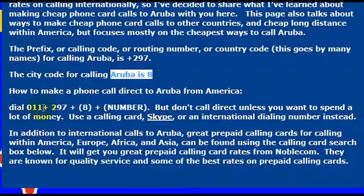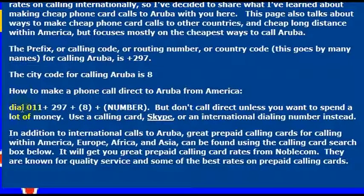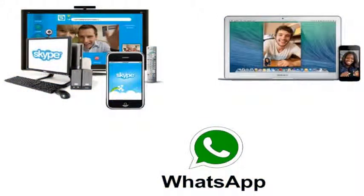However, I would recommend some different options. If you want to call directly from an internationally enabled phone, simply dial 011 plus 297. But I wouldn't really recommend calling direct — your phone company will charge you a lot of money.